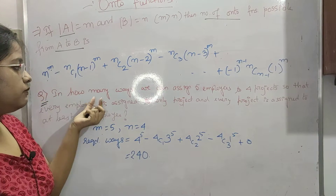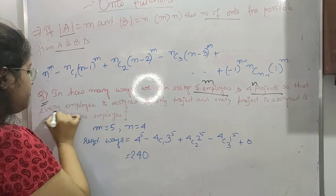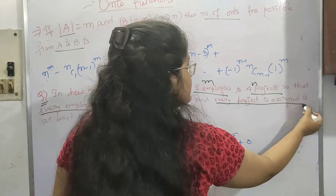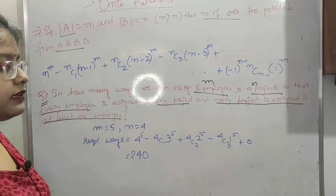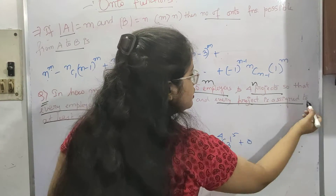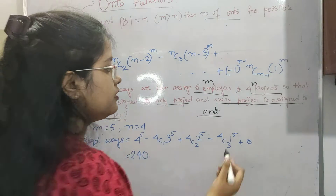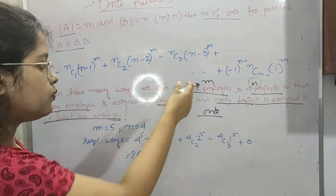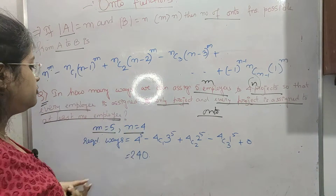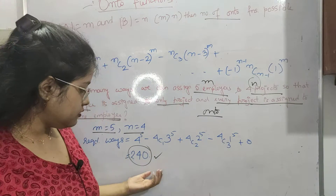Let's see an example. In how many ways can we assign 5 employees to 4 projects, such that every employee is assigned to only one project and every project is assigned to at least one employee? Here M is 5 and N is 4. Since every project must be assigned to at least one employee, this is an onto function. Applying the formula with M=5 and N=4, the result comes out to 240.